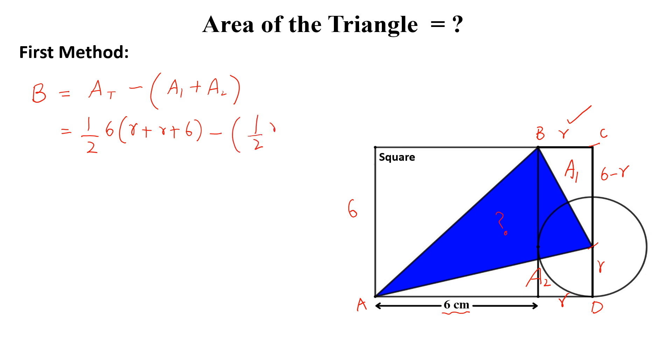A1 is half of r into 6 minus r plus half of area of A2, r into r plus 6. Now we will simplify this.